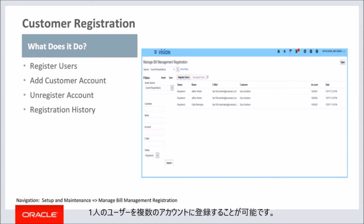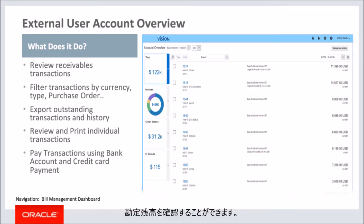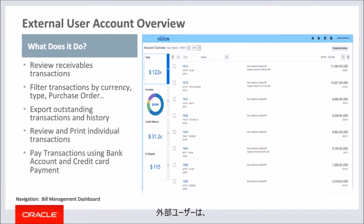It is possible to register one user for multiple accounts. A user can also unregister the external contact for one account at a time. External users can review the account balance by aging bucket, outstanding credit memos, and dispute transactions in one or more accounts. They can filter transactions by currency and account number, and search transactions by transaction number, type, and purchase order number.